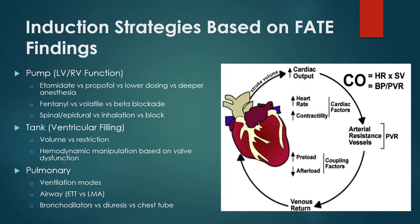When discussing the use of FADE findings, you can look at pump function — LV and RV function — which changes your induction strategies. Maybe you use etomidate or ketamine, or just enough propofol to turn the tubing white, adjusting tolerance for drug onset and using more fentanyl instead of over-pressurizing with volatile. You might avoid certain drug regimens such as beta blockade, or choose spinal versus epidural versus a nerve block to keep your volatile agent down. You also assess tank or ventricular filling, volume versus restriction, and hemodynamic manipulation based on valve dysfunction.